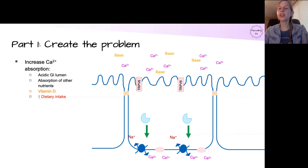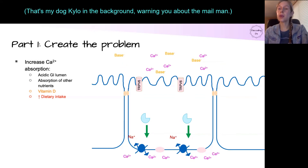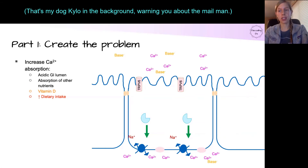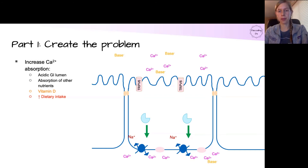This also increases paracellular absorption because it overwhelms the calcium transport mechanisms. Plus, that alkaline substance is also going to be absorbed — if you have a large amount of it present, more of it gets absorbed.